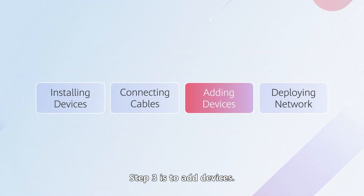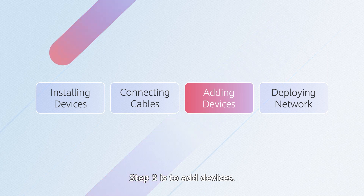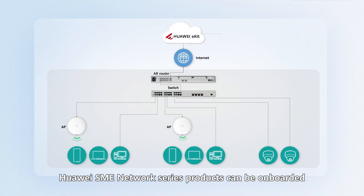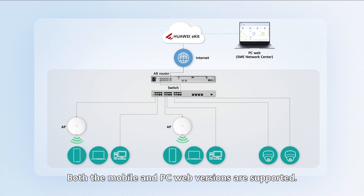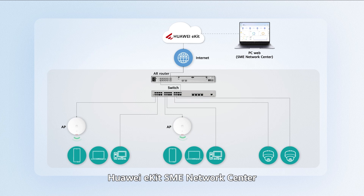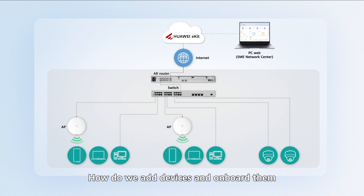Step 3 is to add devices. Huawei SME Network Series products can be onboarded and remotely managed through the Huawei eKit system. Both the mobile and PC web versions are supported. Huawei eKit SME Network Center is a PC web-based operation platform. How do we add devices and onboard them through Huawei SME Network Center?